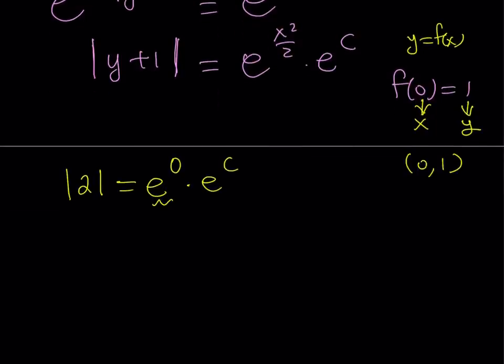Now, absolute value of 2 is absolutely 2 because 2 is positive. So, this is kind of nice. And e to the power 0, as you know, is equal to 1. So, this should give us something like this, right? e to the power c equals 2.